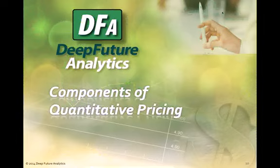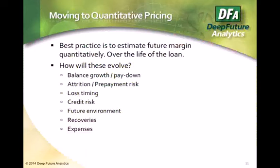That's why I'm so passionate about this — I've seen these portfolios fail from the inside and it doesn't have to be that way. To move to quantitative pricing, best practice is to estimate future margin quantitatively over the life of the loan. If I set this price, what will I get as a return? In every organization, someone has a model — usually a spreadsheet — that says, with this pricing, here's my estimate on our margin.